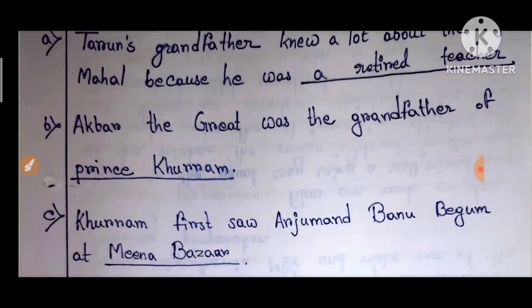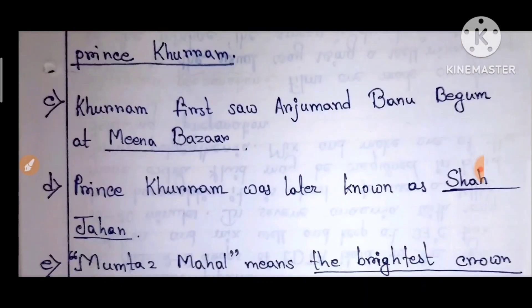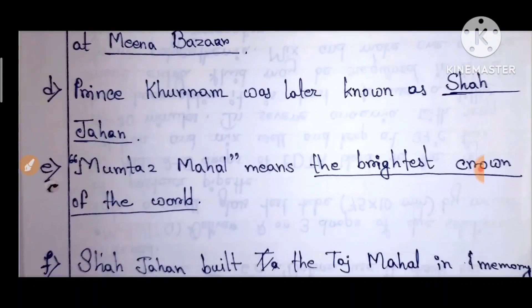Akbar the Great was the grandfather of Prince Khurram. Khurram first saw Arjumand Baanu Begam at the Meena Bazaar.